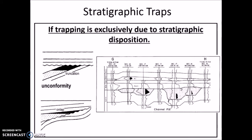Stratigraphic traps occur when the trapping is exclusively due to stratigraphic disposition. It occurs when rock layers change from a good reservoir to non-reservoir due to change in rock type — for example, pinch out, reservoir quality change due to diagenesis, or removal due to an unconformity. Unconformities are caused by a period of erosion and deposition, representing a gap in the geologic record. Unconformities can result in the truncation of permeable reservoir rocks overlain by an impermeable unit of rock.